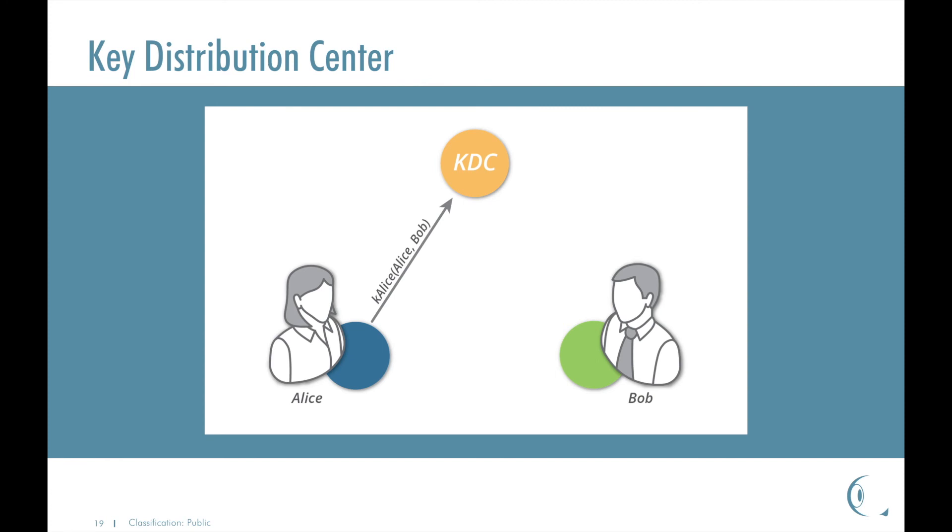The key distribution center now needs to inform Alice and Bob of the session key. The key distribution center thus sends back an encrypted message to Alice containing the session key. In reality, the message also contains the session key encrypted with Bob's key K-Bob. Once Alice receives the message from the key distribution center, she extracts the session key from the message. Now she knows the one-time session key SK. Alice also extracts the session key encrypted with Bob's key and forwards it to Bob. He decrypts the received message using the key. Now Bob also knows the one-time session key SK. Since both Alice and Bob have the same session key, they can use it for secure communication protected by a symmetric encryption algorithm.